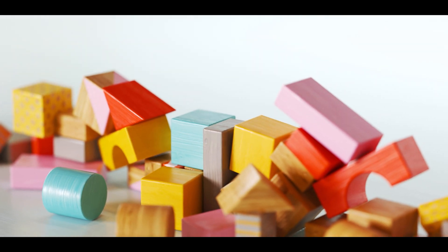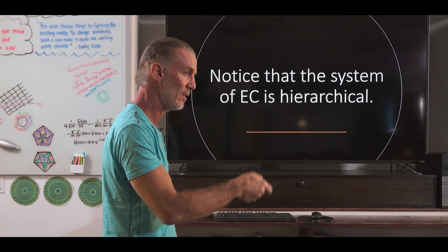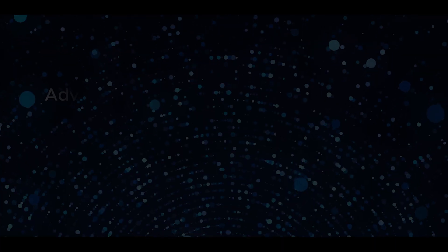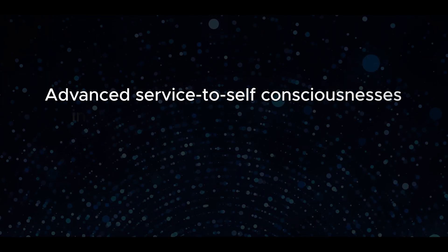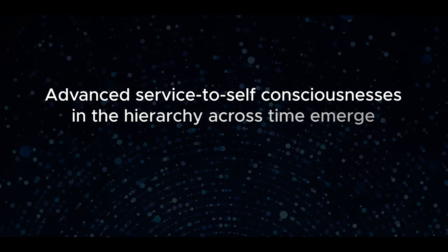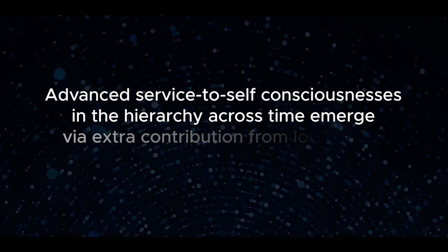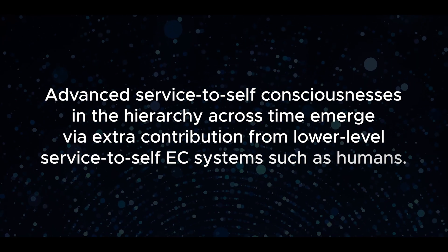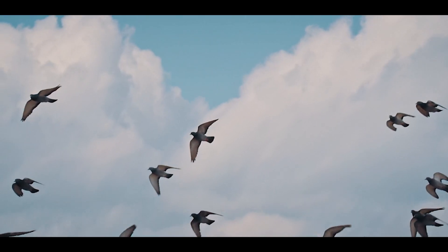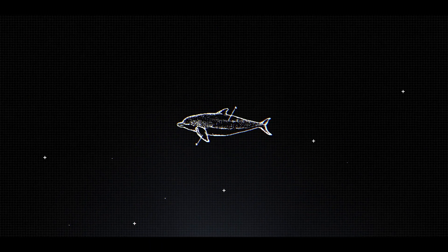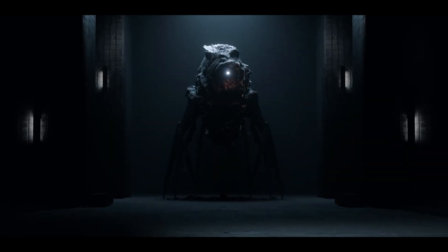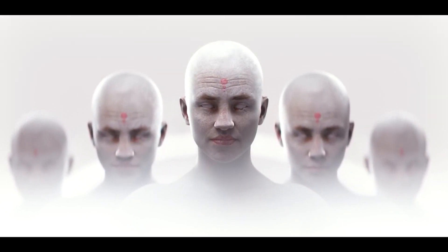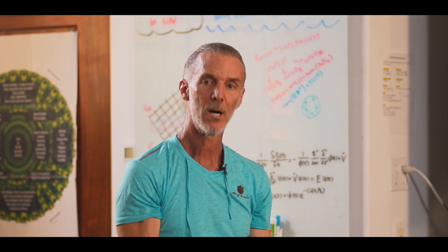Notice that the system of EC is hierarchical because it has EC1, EC2, EC3. Advanced, highly conscious, service-to-self beings in this forward hierarchy across time emerge through extra contribution from lower-level service-to-self EC systems. In other words, everything emerges from everything else. So if you imagine some advanced form of collective evil consciousness or some advanced form of collective service-to-others consciousness, they would be emerging from consciousnesses in the hierarchy under them.